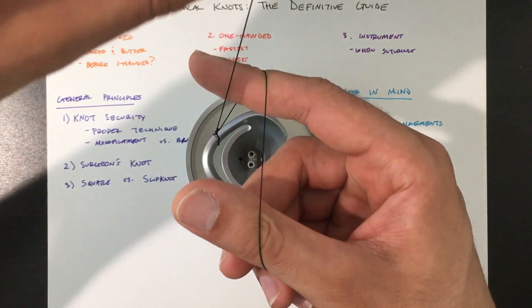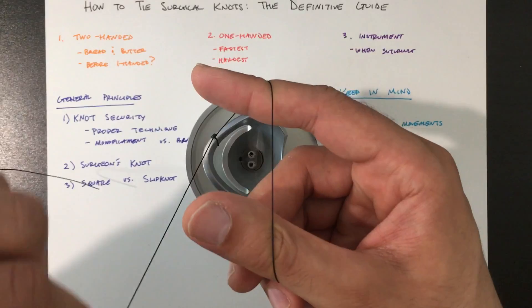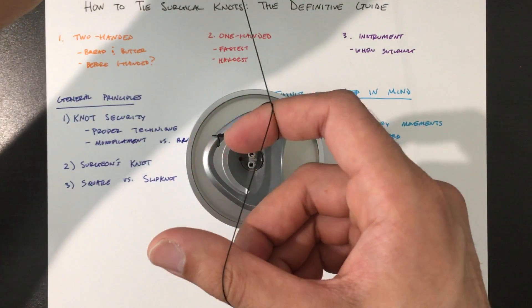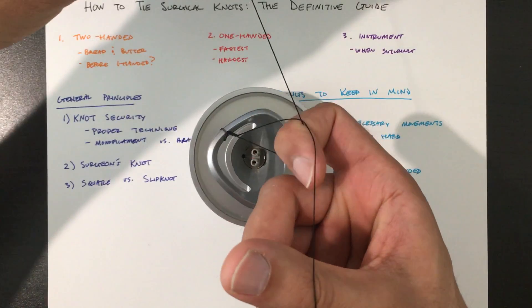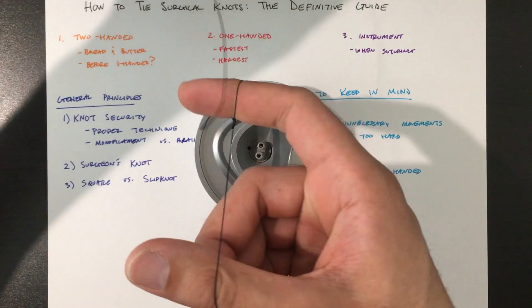Take the opposite side. Again, wrap it in the opposite direction. And this is the hard part of the one-handed tie. You want to take your index finger and bring this side through the loop.